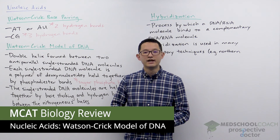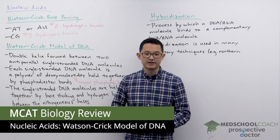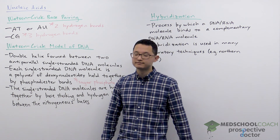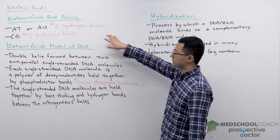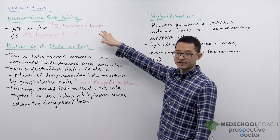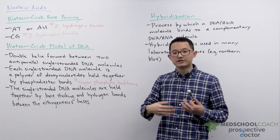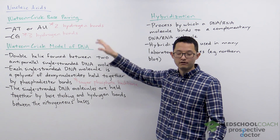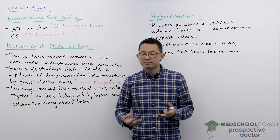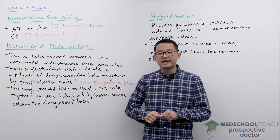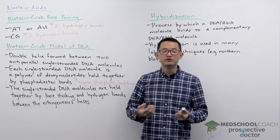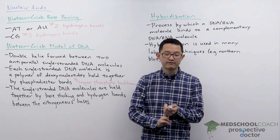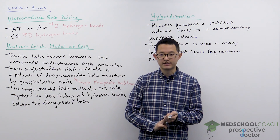In this video we're going to go over the Watson-Crick model of DNA as well as hybridization. We're actually going to start first by talking about Watson-Crick base pairing. This is not specifically just for DNA — this can also be applied for RNA as well. DNA and RNA are made from nucleotides which include phosphates, 5-carbon sugars, and nitrogenous bases.